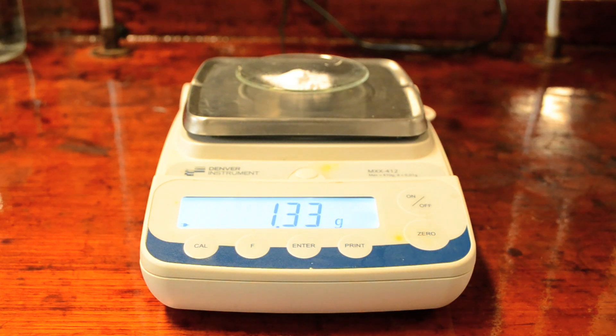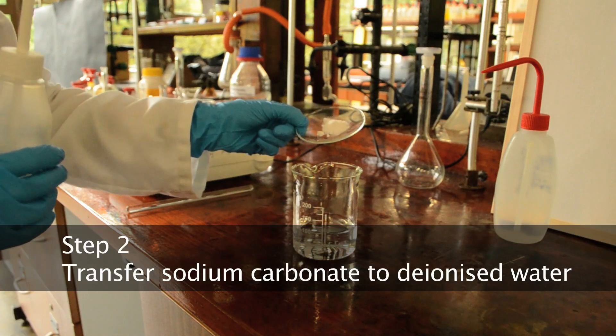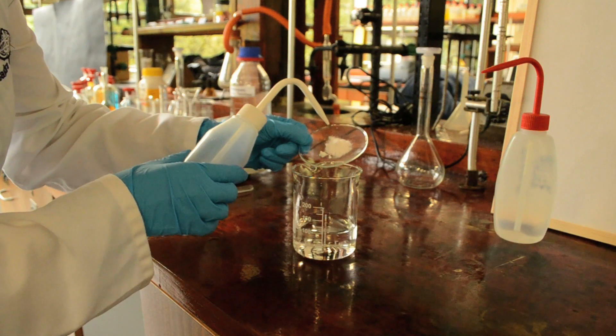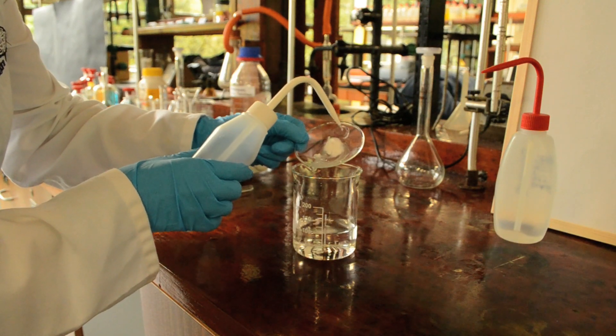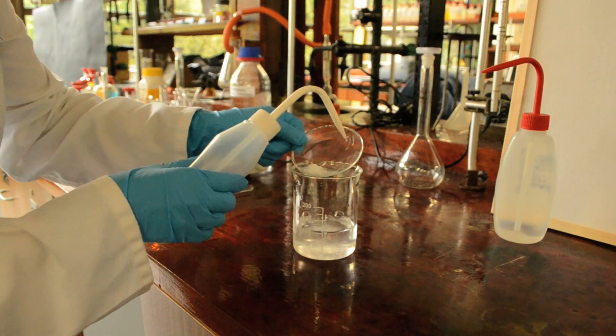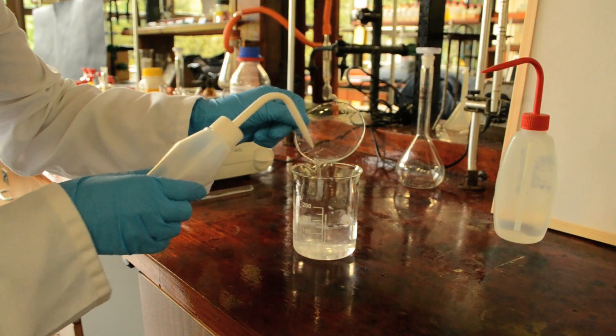Okay, 1.33 grams of sodium carbonate weighed out. I'm going to transfer the sodium carbonate into the beaker by washing it down from the clock glass using deionized water, making sure to wash every little bit of the sodium carbonate into the beaker.